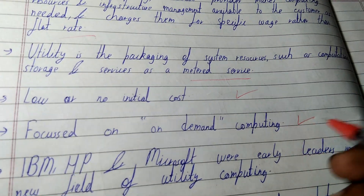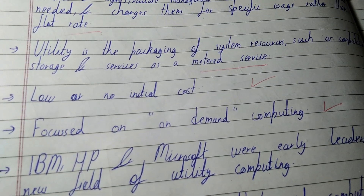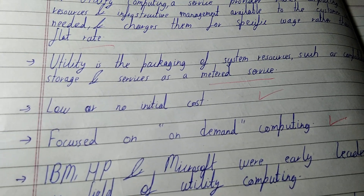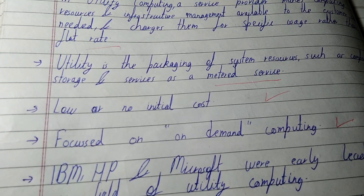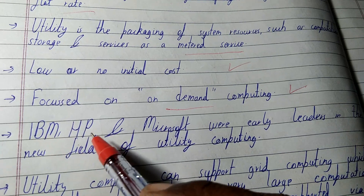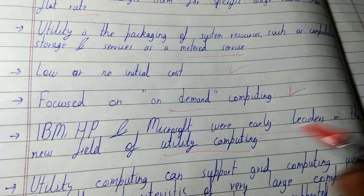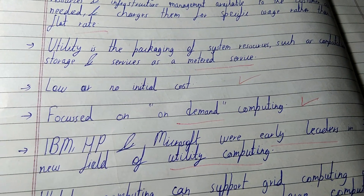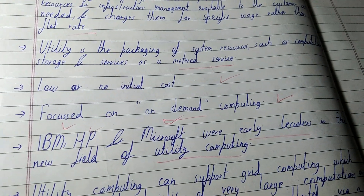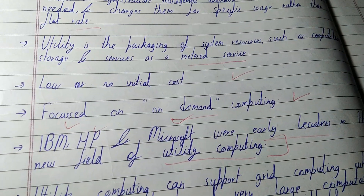There is no large initial cost because you only pay when you use it. It is focused on on-demand computing — when the customer needs to use computing resources, they use it and pay according to their usage. They don't have to rent it for days or months. IBM, HP, and Microsoft are early leaders in this new field of utility computing, which shows how significant and developed utility computing is.